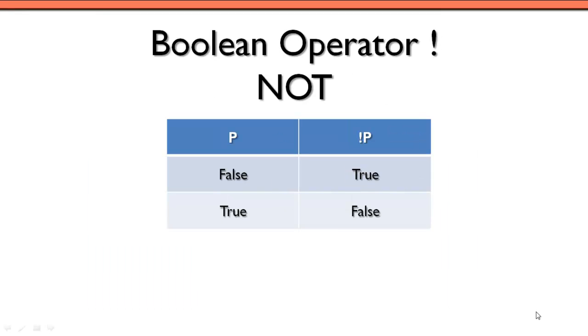Okay, so the last Boolean operator that we're going to look at is the NOT operator. So the NOT operator is just simply the exclamation point. And the NOT operator is different from the other Boolean operators in that it is a unary operator, meaning it only works on one operand, whereas the other Boolean operators, they were binary operators, so they worked on two operands.